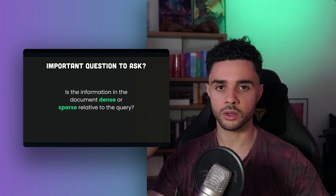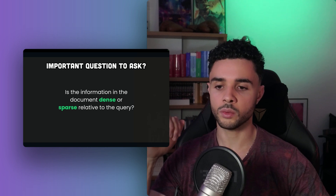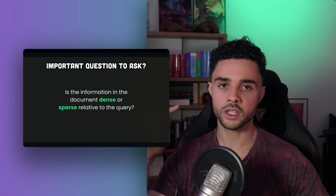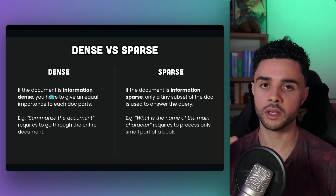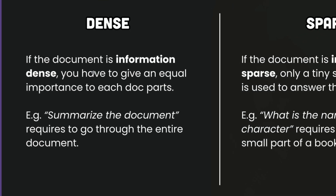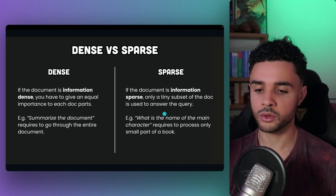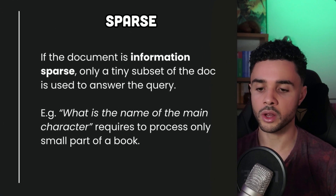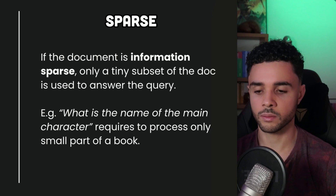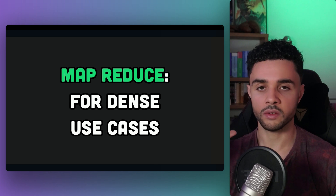Before we dive into the solution, we need to ask a crucial question: is the information in the document dense or sparse relative to the query? In dense scenarios, most parts of the document are relevant to our query — for example, summarizing an entire document requires processing all of it. In sparse scenarios, only specific parts are relevant; for instance, finding the main character of a book might only require a small portion of the text.